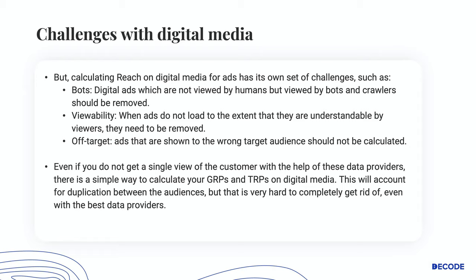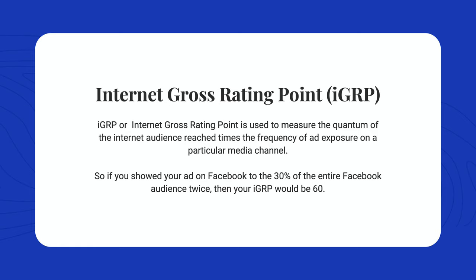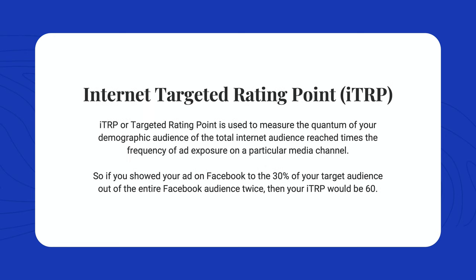The digital equivalent of GRP is IGRP, or Internet Gross Rating Point. It is used to measure the quantum of internet audience reached times the frequency of ad exposure on a particular media channel. So if you showed your ad on Facebook to 30% of the entire Facebook audience twice, then your IGRP would be 60.